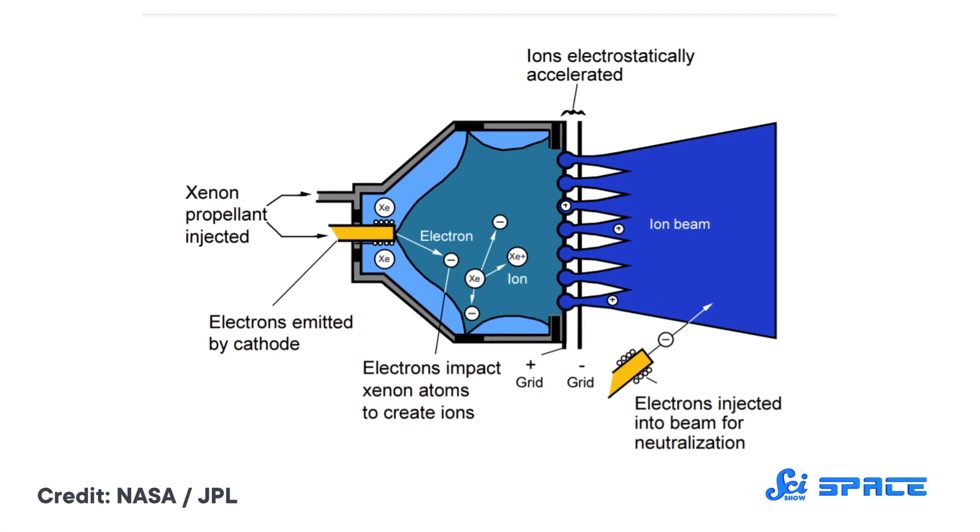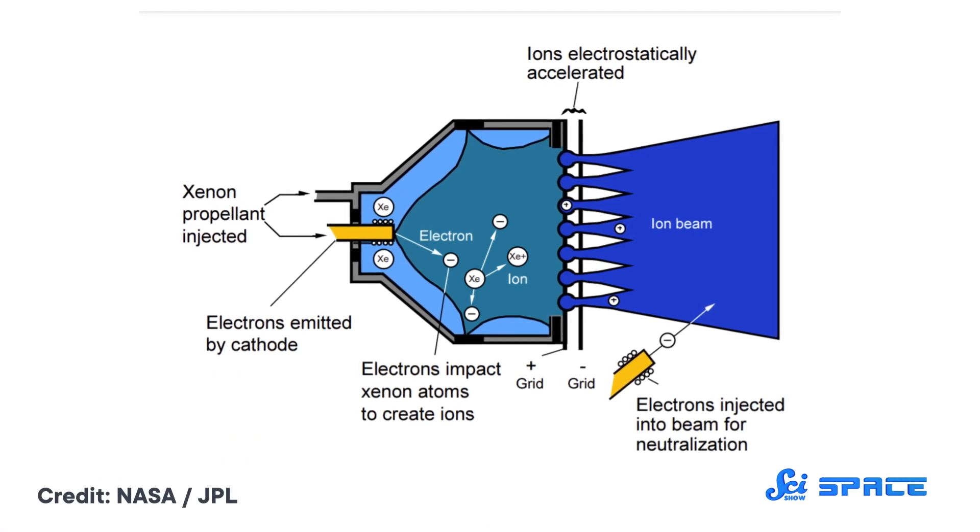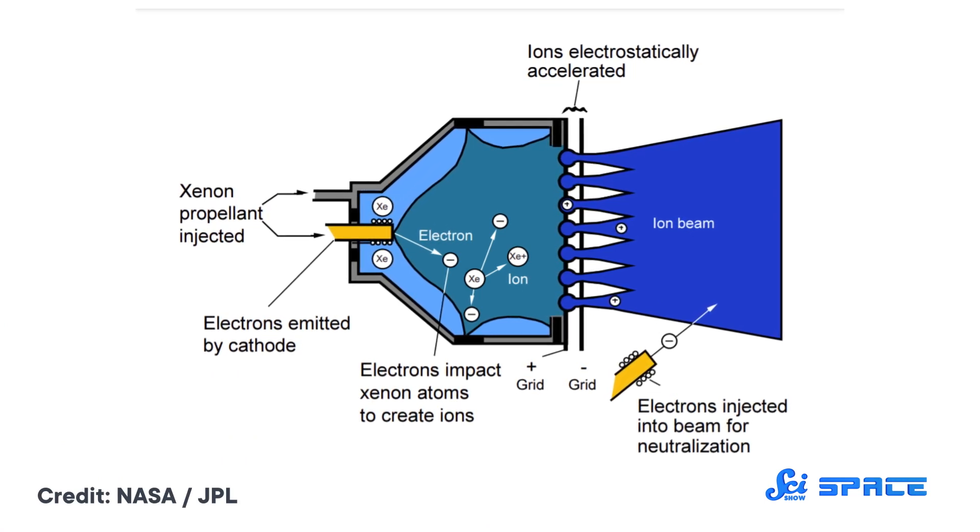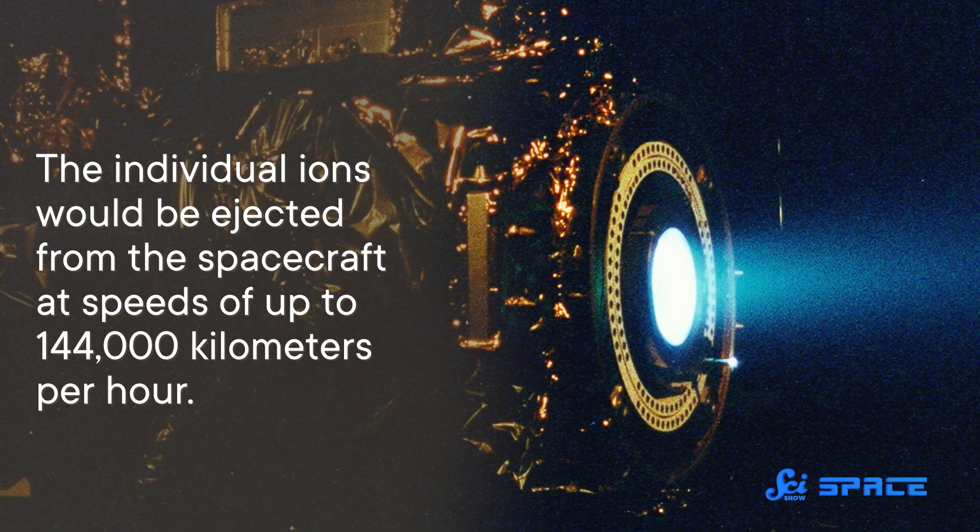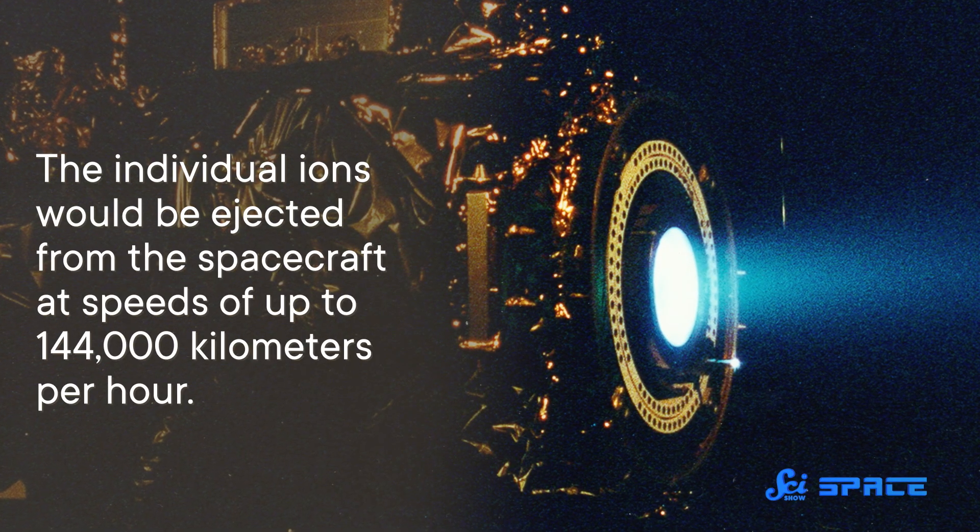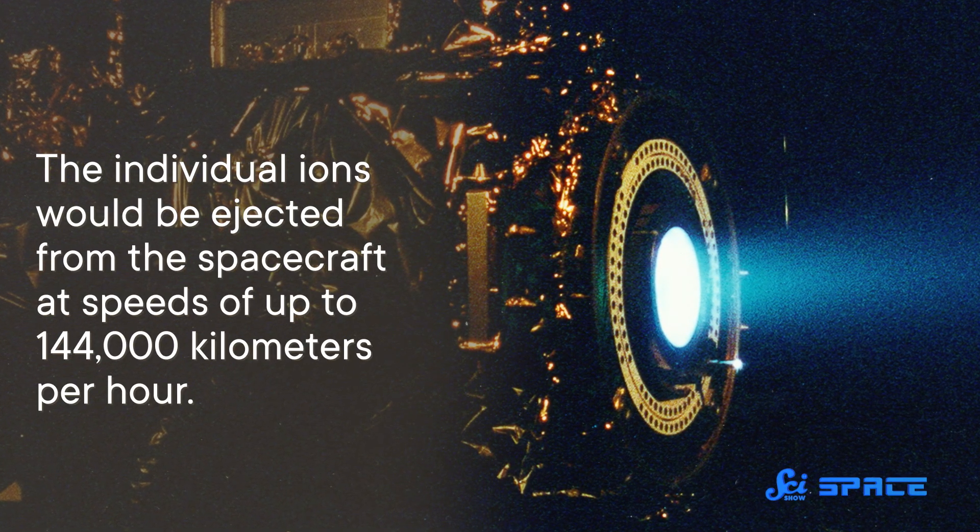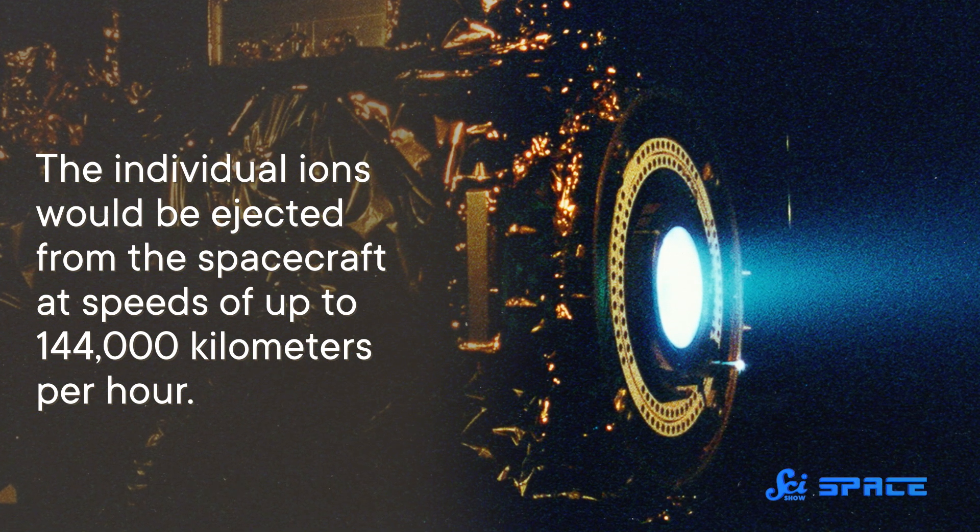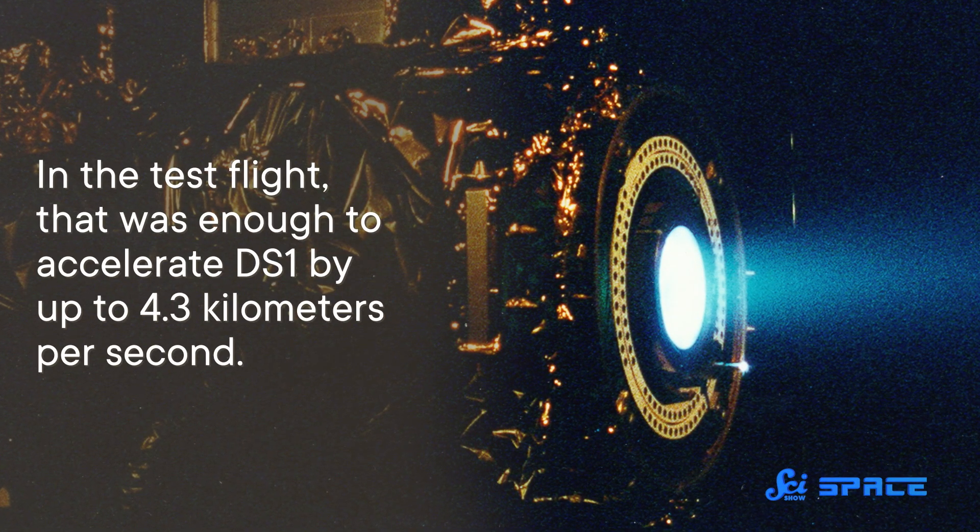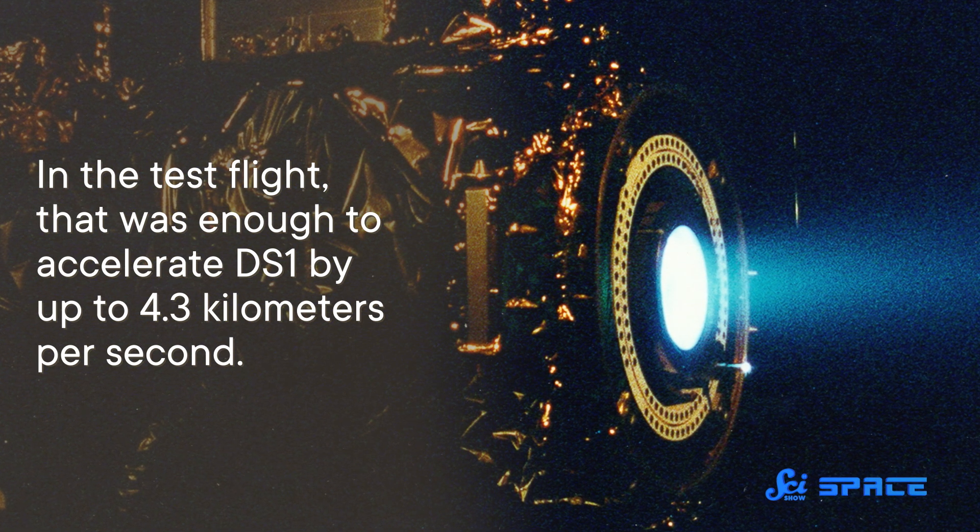So Deep Space One tried out a new type of engine that used ions instead of conventional exhaust gases. The idea is that small quantities of xenon gas could be electrically charged and then accelerated by an electric field. The individual ions would be ejected from the spacecraft at speeds of up to 144,000 kilometers per hour. In the test flight, that was enough to accelerate DS-1 by up to 4.3 kilometers per second.